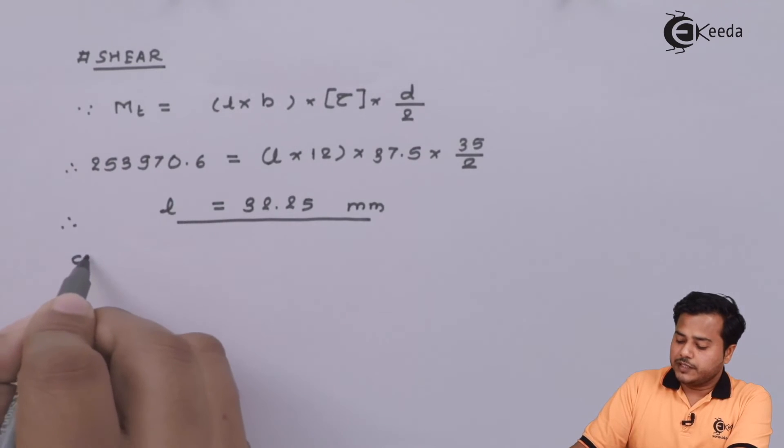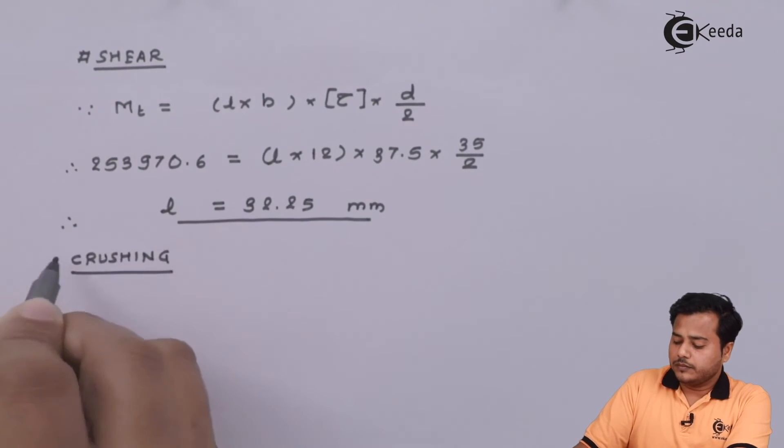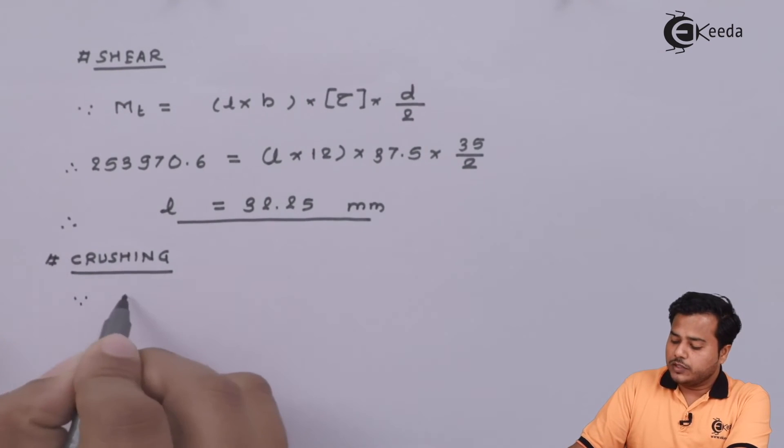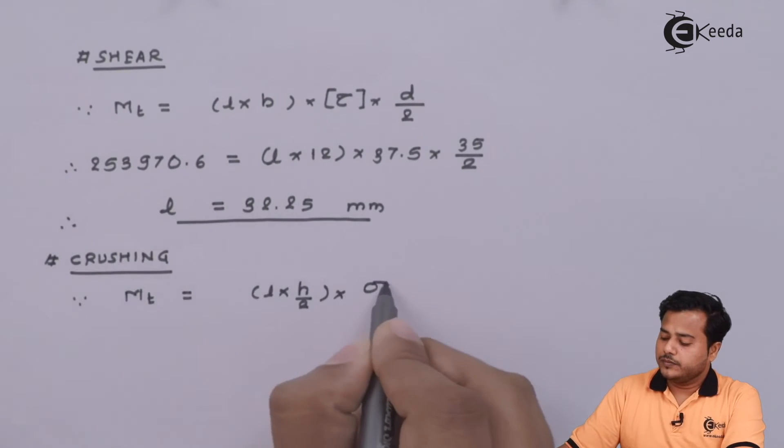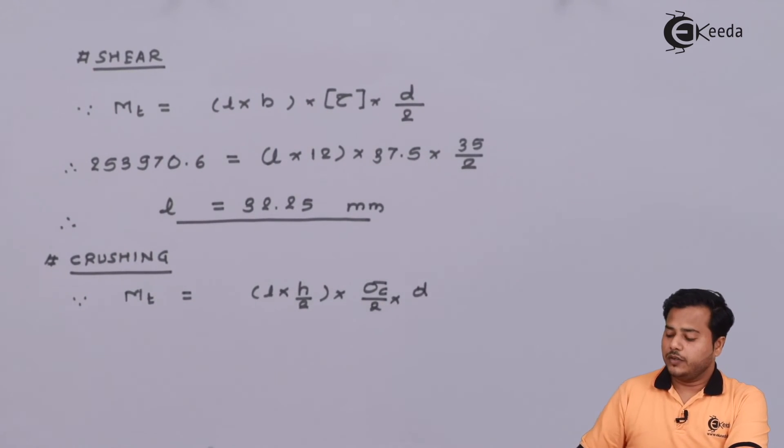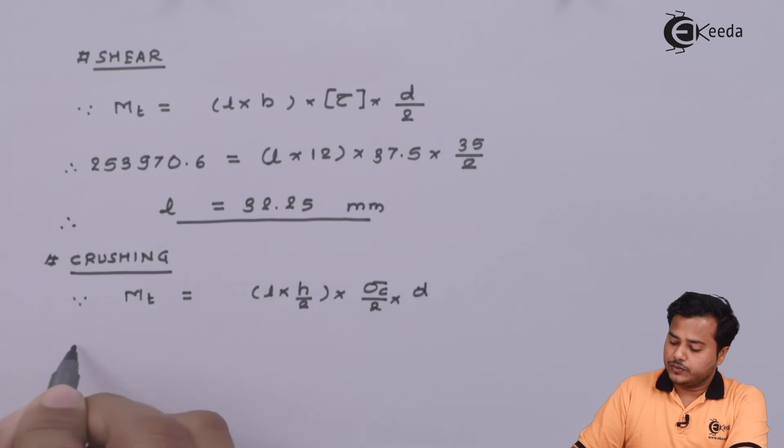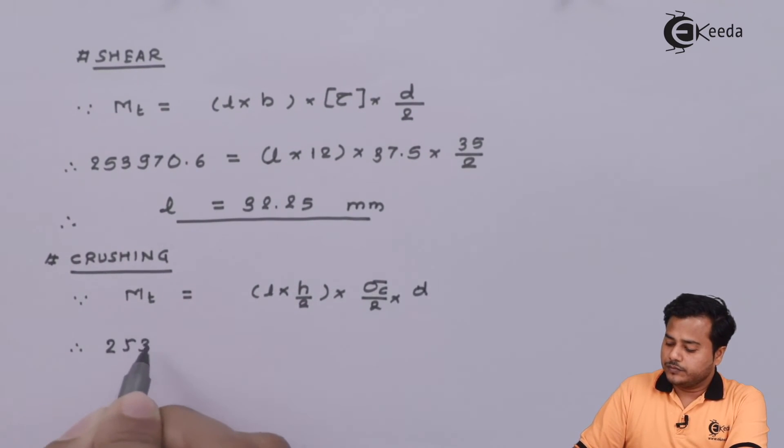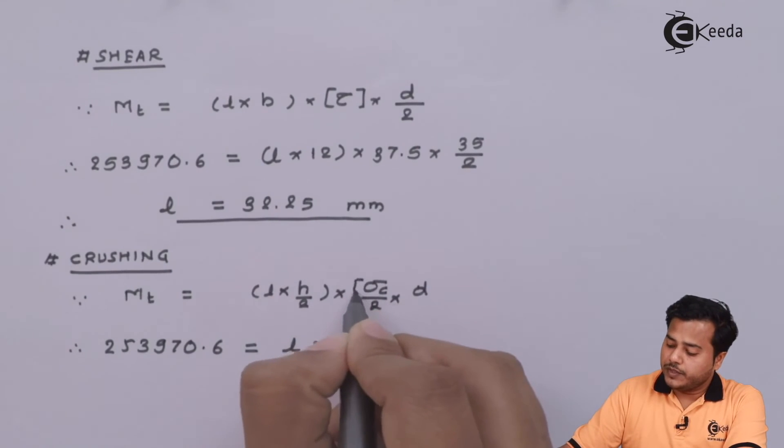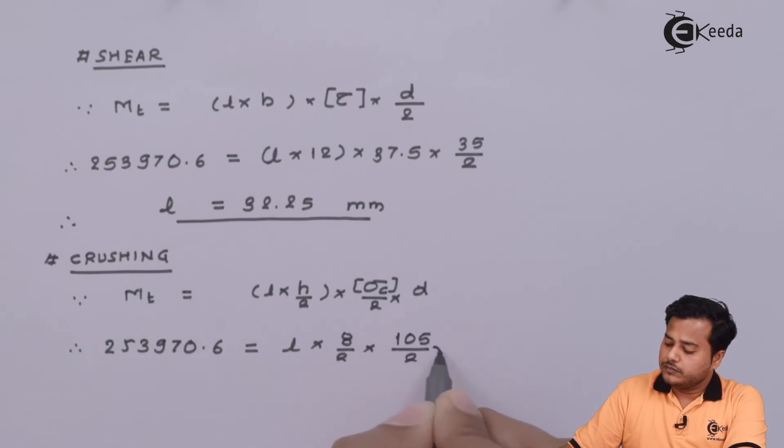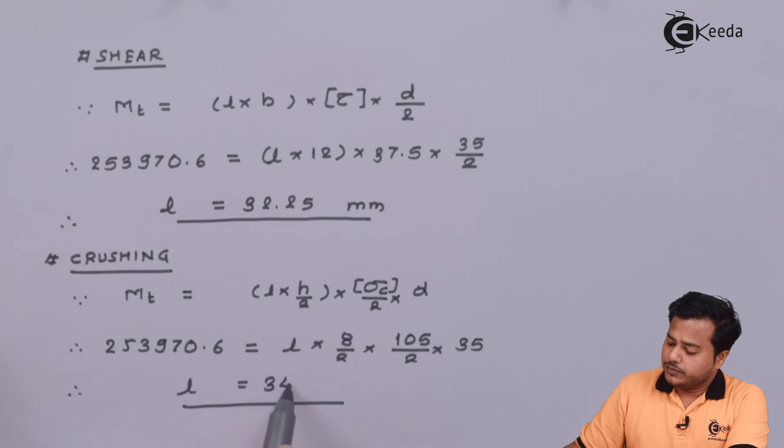Let us consider another aspect, that is crushing. We know that for crushing, the torque transmitted is given by MT = l × h/2 × σc × d/2, where all other parameters are given to us. The sigma c value is going to be the allowable value. Therefore, length comes out to be somewhere around 34.56 millimeter.